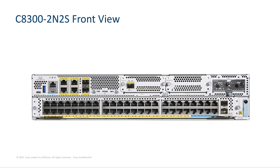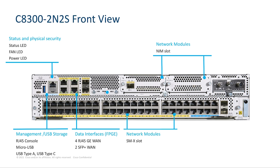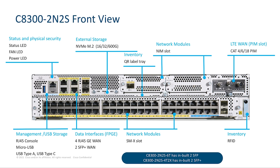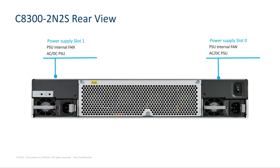Let's take a closer look at the 8300 2 rack unit chassis. It has status LEDs, management console and USB ports for additional storage, 6 WAN ports for port density, 2 NIM and 2 SM slots for modularity. It comes with a built-in pluggable slot for cellular WAN access with 4G and 5G support, a built-in slot for M.2 external storage, and an RFID and QR label for advanced inventory management. On the rear side, there are two internal highly efficient power supplies and a field-replaceable fan tray with four internal fans for chassis cooling.